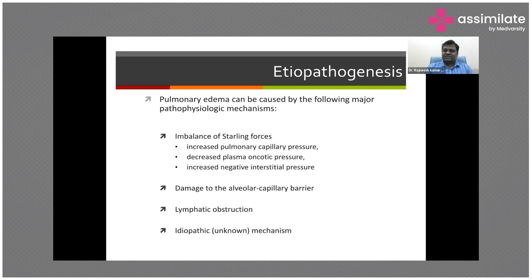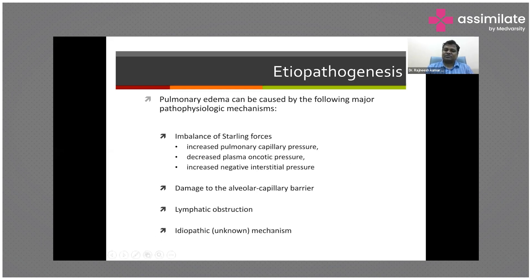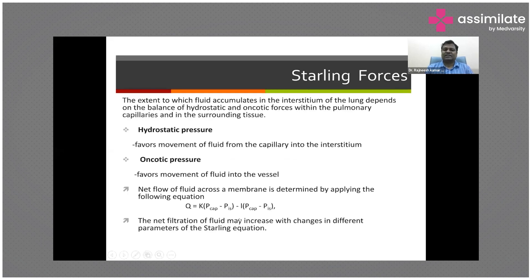Another mechanism is damage to the alveolar capillary barrier. There is a membrane between blood vessels and alveoli comprised of endothelium, interstitium, and alveolar epithelium. Whenever this membrane is damaged due to multiple causes, it causes direct exudation of fluid — without any changes in pressure, fluid from the blood is directly exudated into the alveoli. Lymphatic obstruction can also cause pulmonary edema, as lymphatics drain fluid and return it to systemic circulation; if obstructed, pulmonary edema can result.